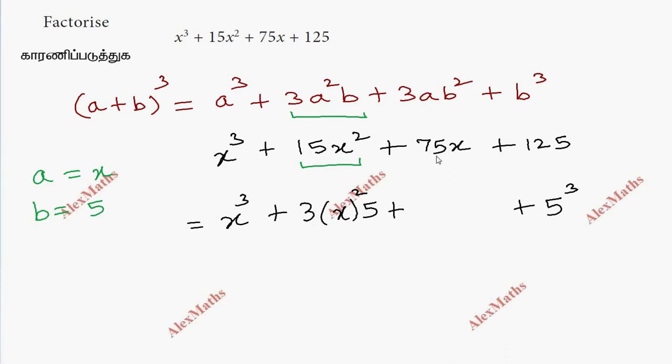75x is in the formula number. So this one is 3ab², and b² is 5².